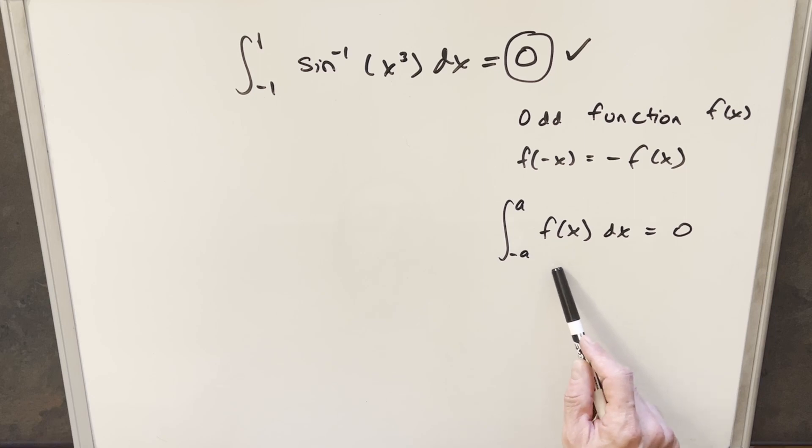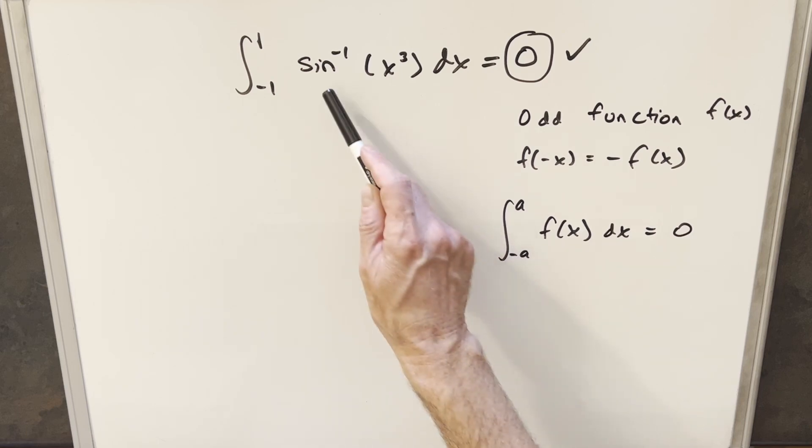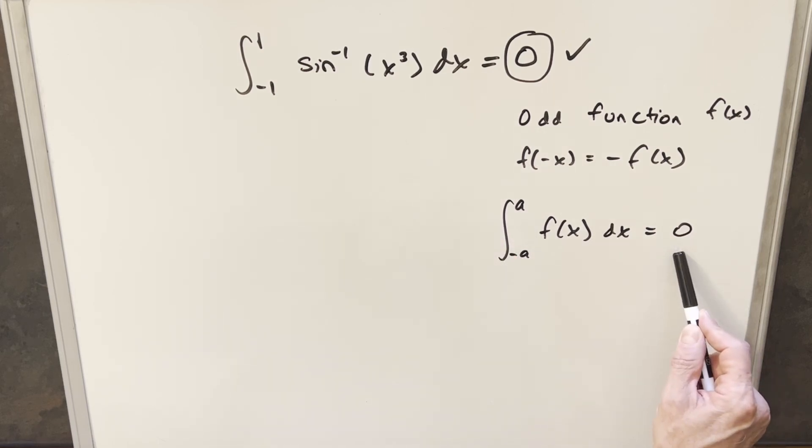And then we can use this property with integrals, where f(x) is an odd function, and we have symmetric bounds around the y-axis, then we can say our whole integral is zero. So this is the property that allows us to do an integral in two seconds, because once we identify that it's odd, then we can jump right to our answer of zero.